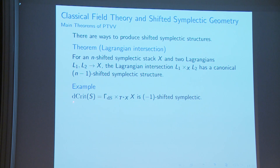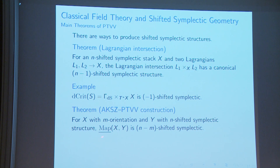The derived critical locus being (-1)-shifted symplectic is explained by this: it is the intersection of the graph of dS and the zero section, which are Lagrangians of the cotangent bundle. Another important theorem is the AKSZ-PTVV theorem: given a mapping stack from X (with m-orientation) to Y (n-shifted symplectic), the mapping stack is (n-m)-shifted symplectic.